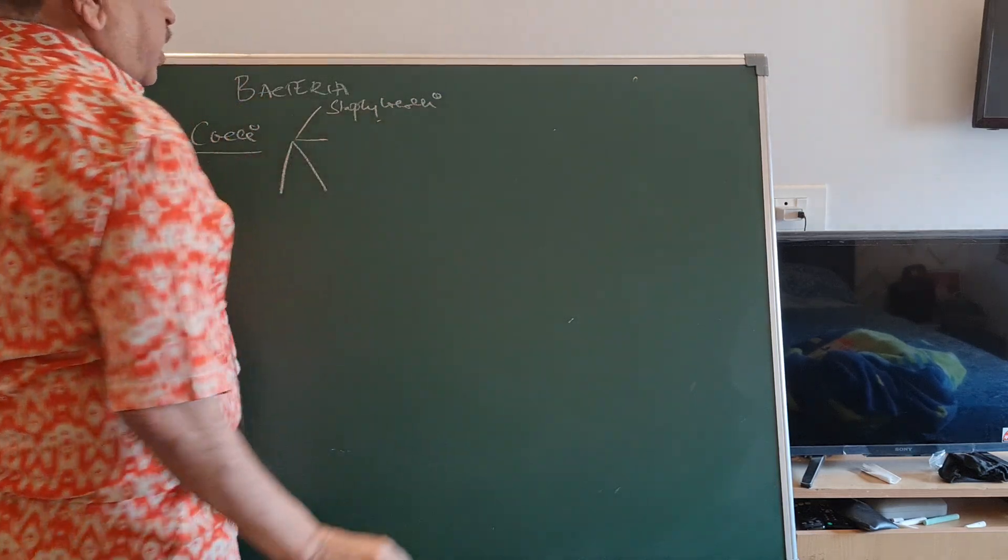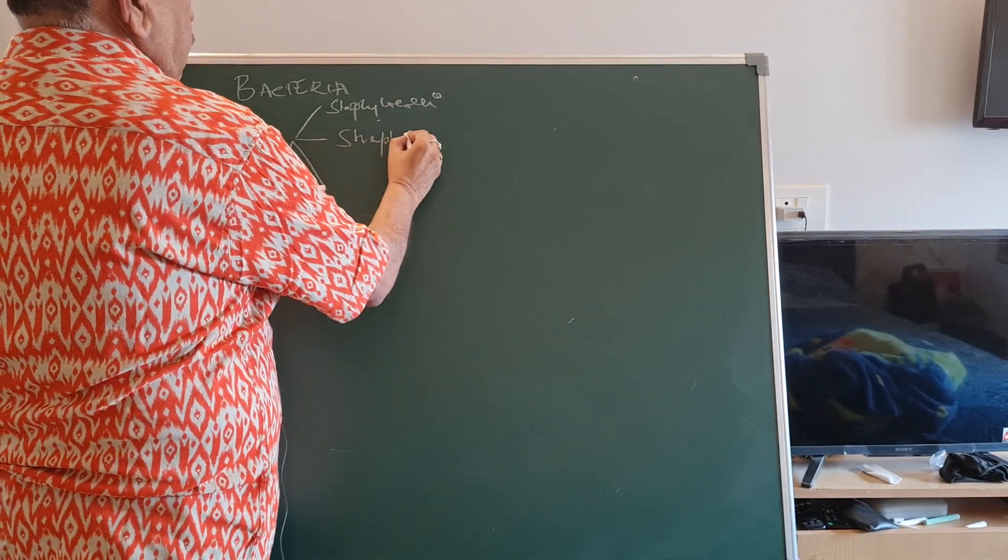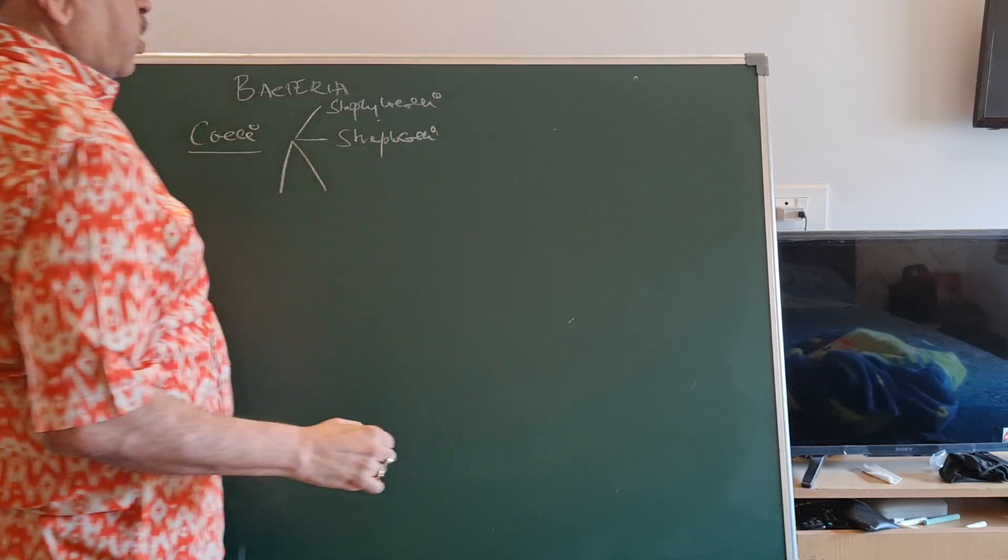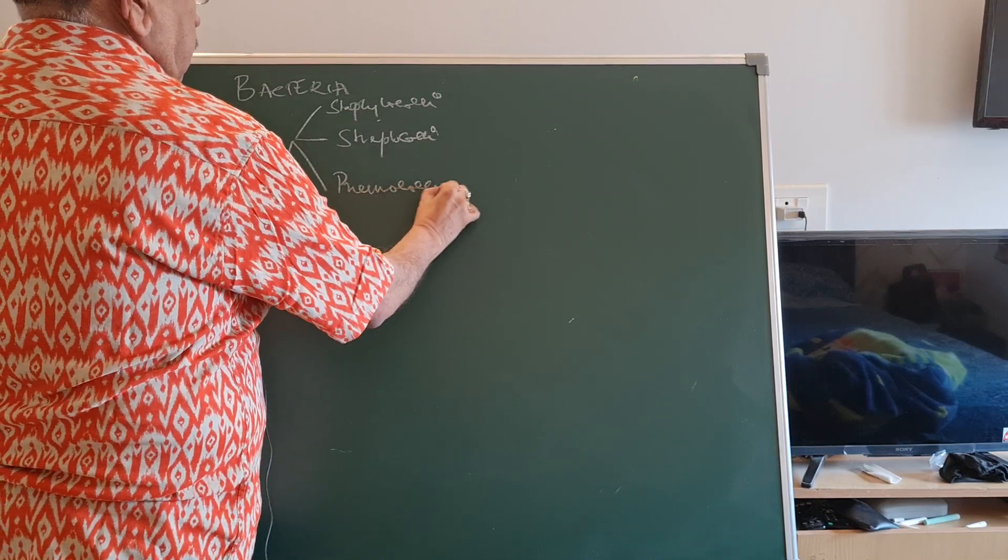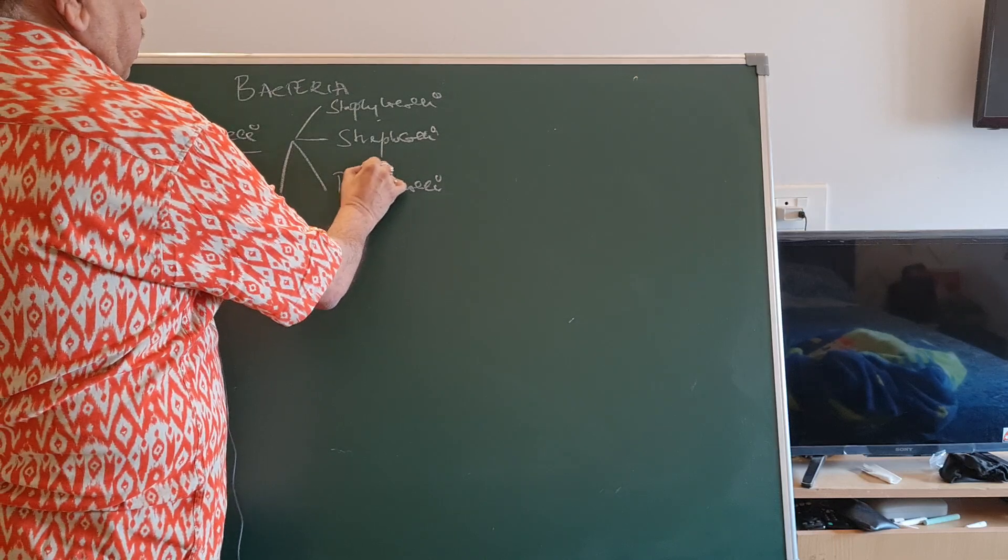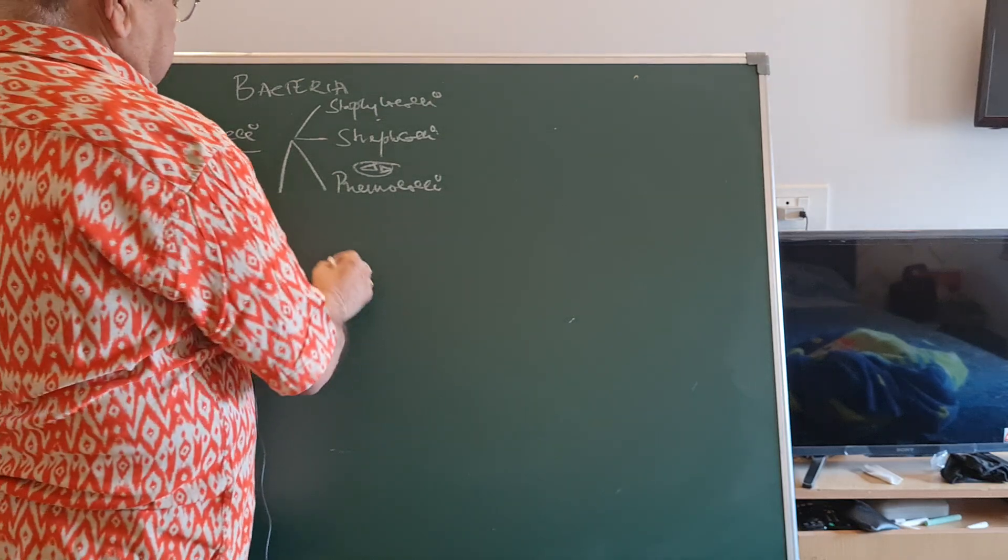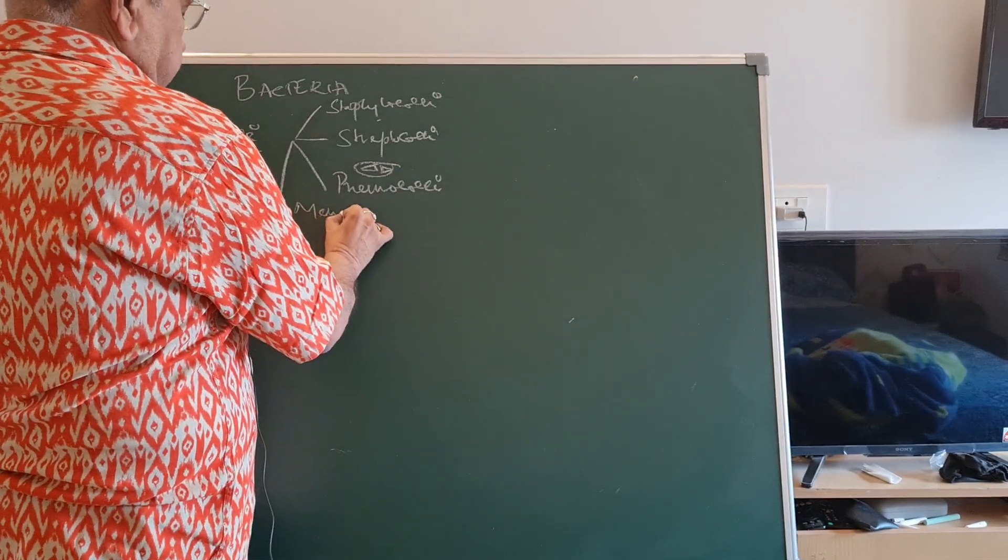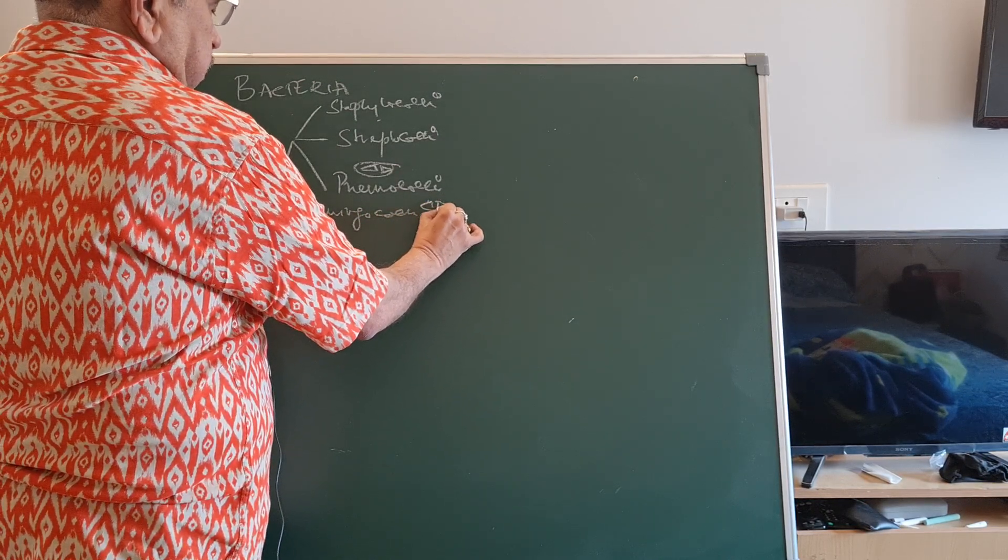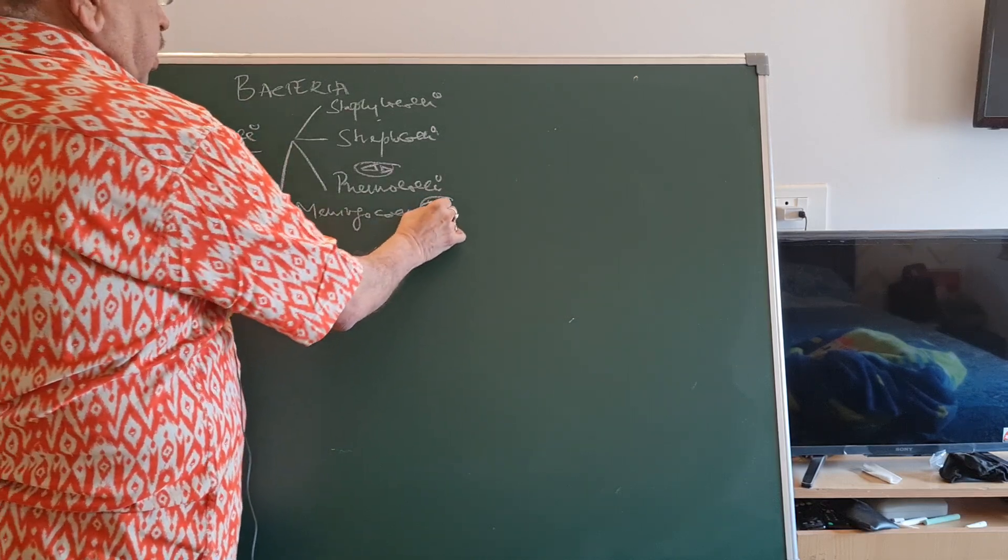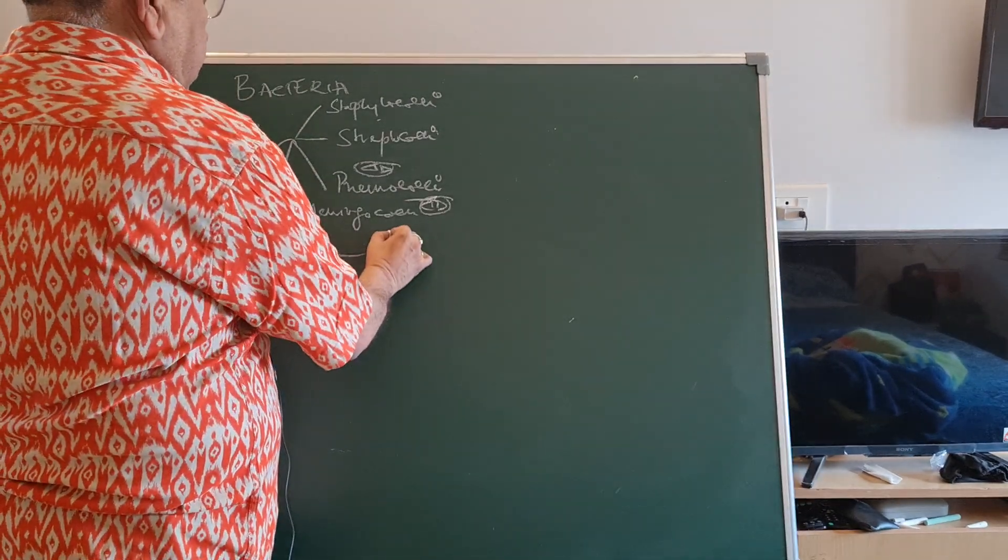It's a gram-positive cocci arranged in clusters. Then streptococci, a gram-positive cocci arranged in chain. Pneumococci is a gram-positive cocci, lancet shaped, with two cocci in a single capsule. It's called pneumococci because it infects the lung. Then meningococci.